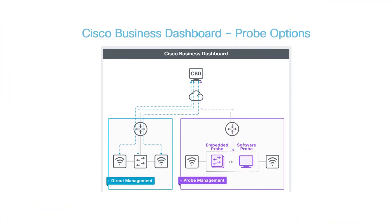A directly-managed network is configured so that devices are directly associated with the dashboard, without the need for a separate probe. This is recommended, but not always an option, because each device needs to have the ability to function as its own CBD agent.